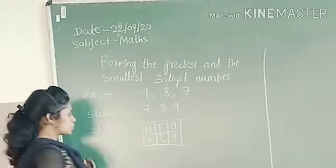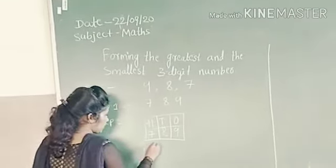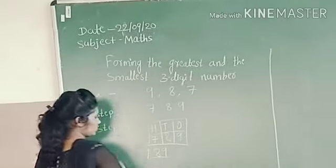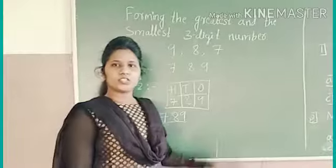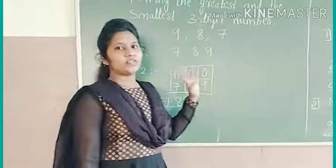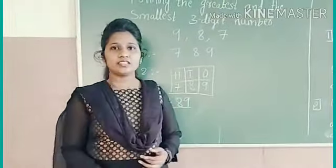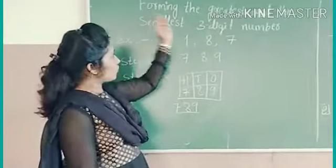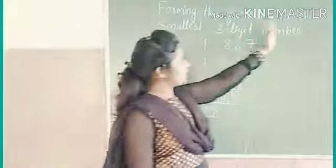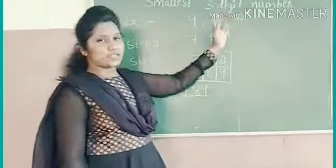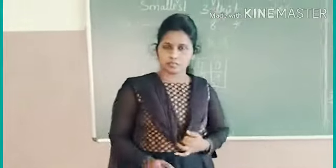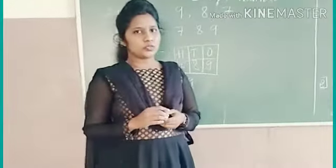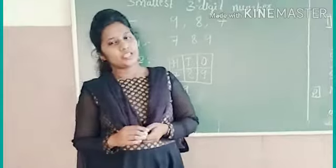This is the smallest 3-digit number. I write here 789 like this. Understood, children? Today what we have learned? We have learned about forming the greatest and the smallest 3-digit number. I hope you all understood. Thank you, children.